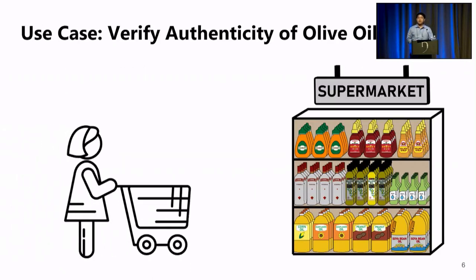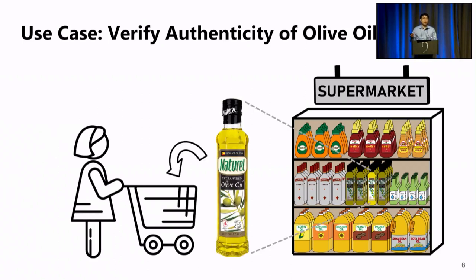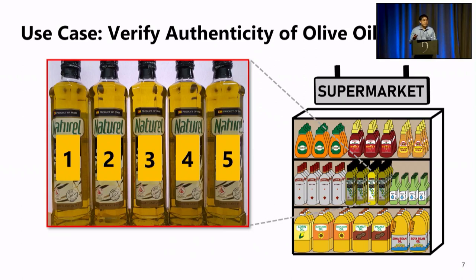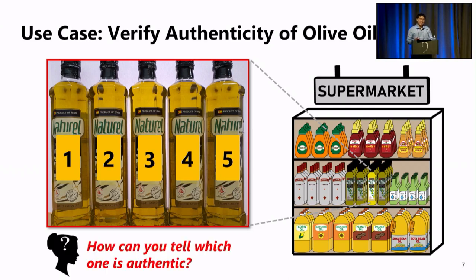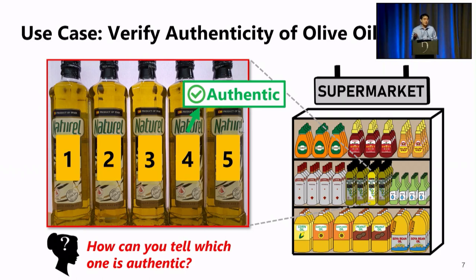Let's imagine that Alice wishes to purchase a bottle of olive oil from a supermarket, and she wants to verify the liquid authenticity before purchasing to avoid health risks. Can you help Alice identify — if I told you that among these five bottles only one is authentic, can you tell? You may or may not guess correctly that instance four is authentic, but you may feel that it is extremely difficult to identify the authentic one without any additional help. So what kind of help can you actually get?